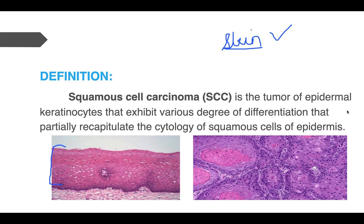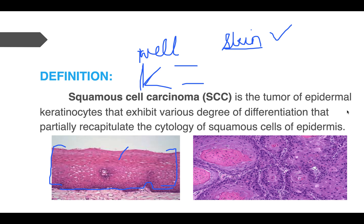You have this squamous lining epithelium — this is a normal lining epithelium with various layers of skin from stratum basalis to stratum corneum. Squamous cell carcinoma is a tumor of epidermal keratinocytes which can exhibit various degrees of differentiation and somewhat resembles squamous cells of the epidermis. It can be well differentiated, moderately differentiated, or poorly differentiated, and we will discuss all of this in detail.